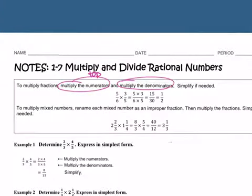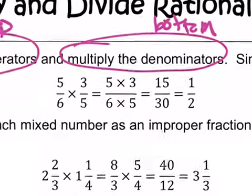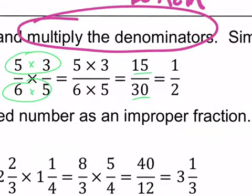So, multiply your top numbers together, multiply your bottom numbers together. On this first example they give you, they've got 5/6 times 3/5. That's all they do. They're multiplying 5 times 3 and 6 times 5. Then they get 15 over 30.